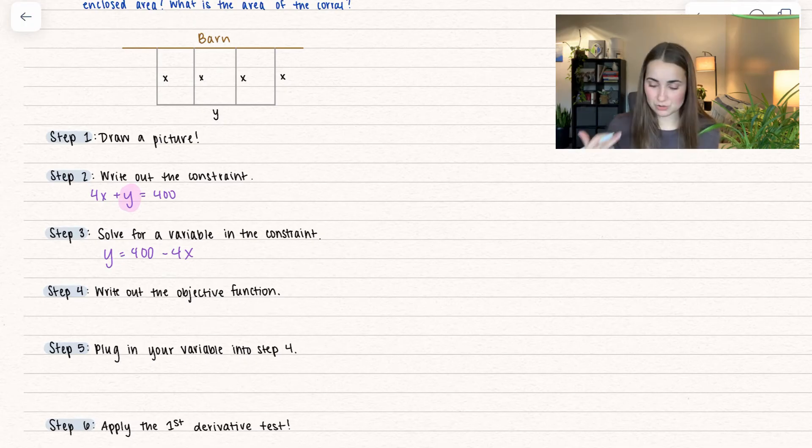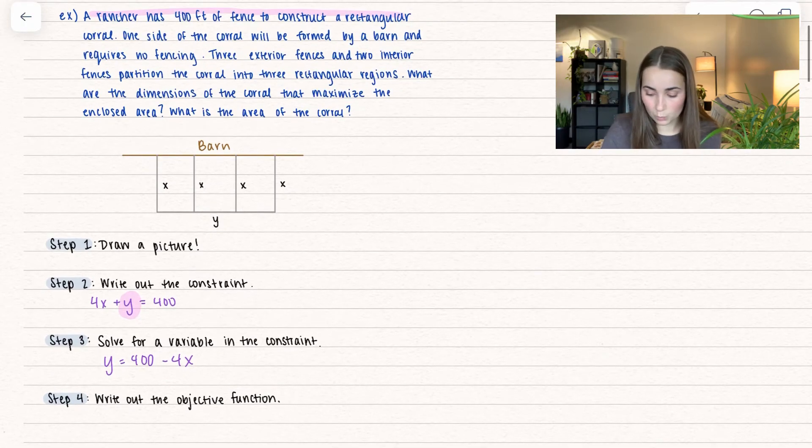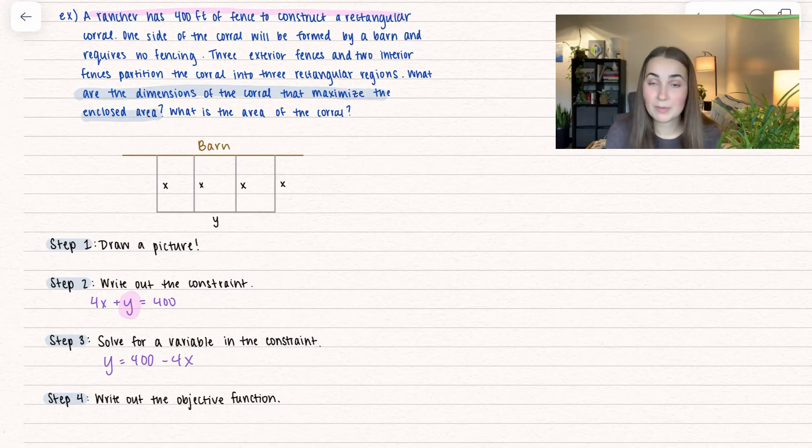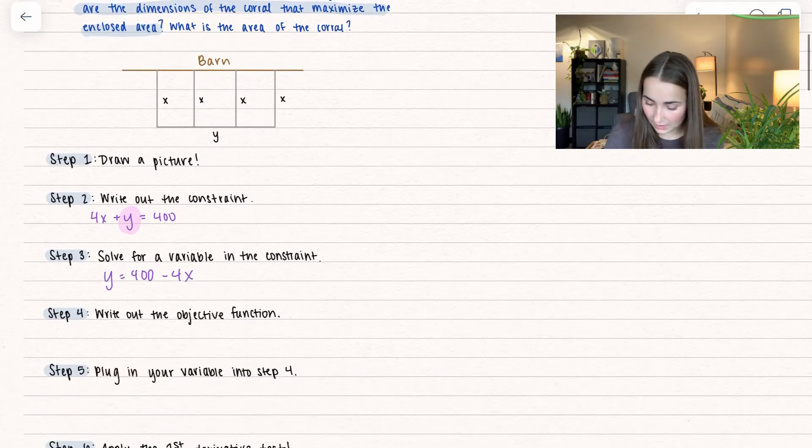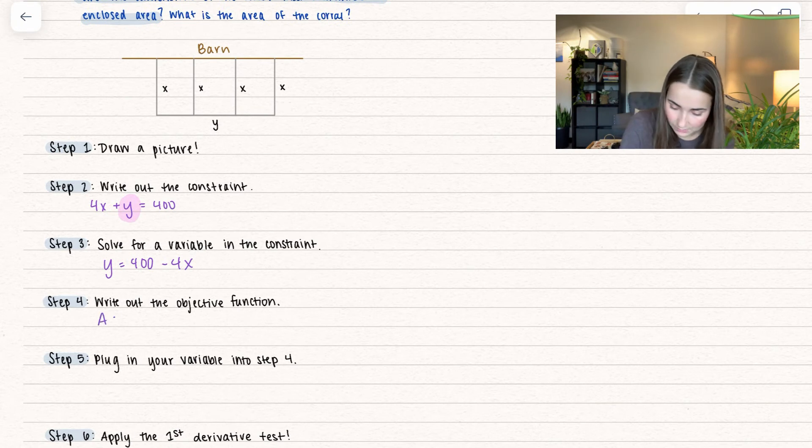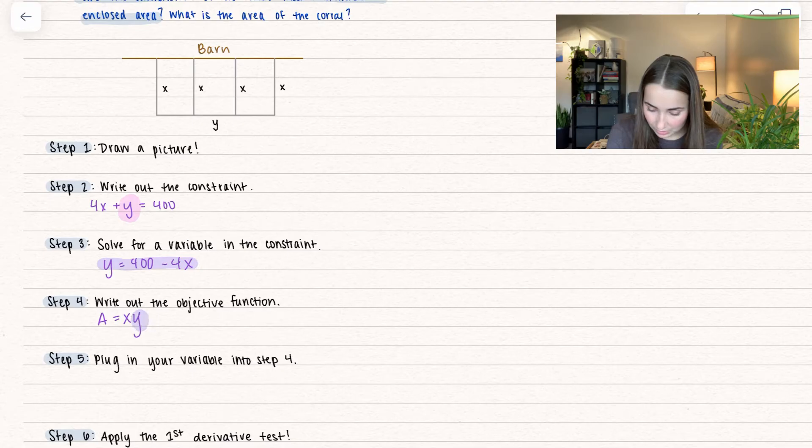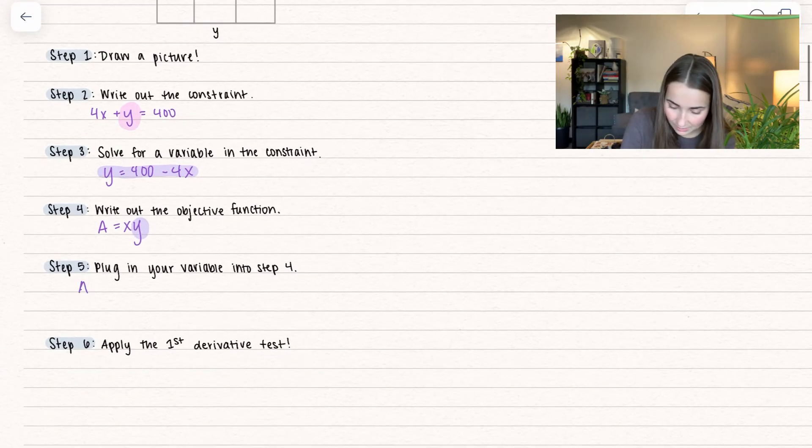Now we write out the objective function - typically what we're trying to optimize. Looking back at the problem, we want to find dimensions that maximize the enclosed area. We're working with area, and I know area equals X times Y. Our area is in two different variables, but that's why we solve for a variable. I'll take what Y equals and plug it in right here.